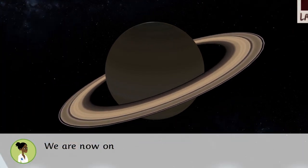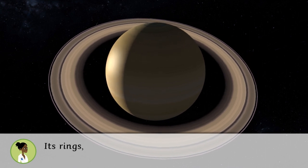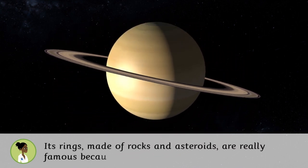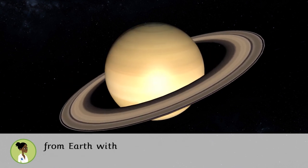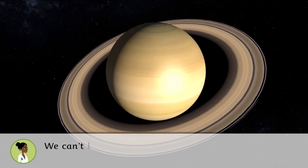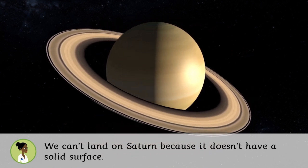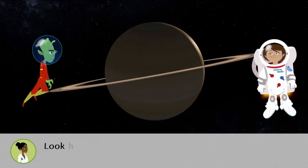We are now on Saturn, the ring planet. Its rings, made of rocks and asteroids, are really famous because they are the only ones you can see from Earth with a telescope. We can't land on Saturn because it doesn't have a solid surface. It is made of liquids and gases. Look how pretty.